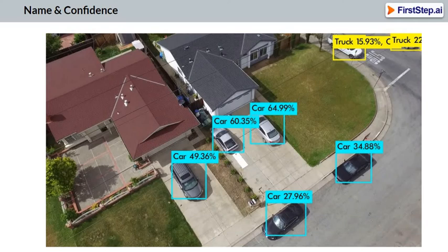When a machine detects objects, it typically tells you three things about that object. Firstly, it tells you the name of the object it finds. Secondly, it tells you the position of the objects in the frame. And thirdly, it tells you the confidence with which it has found those objects.